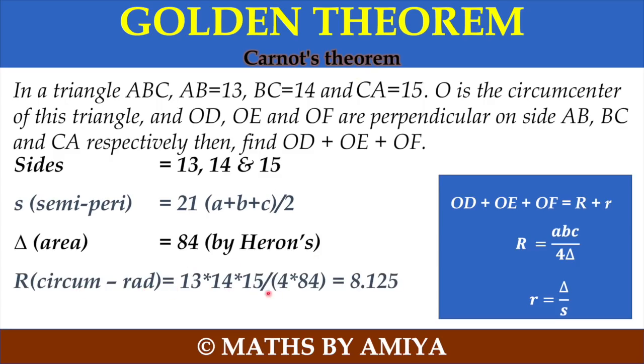Now we have the circum radius, that is ABC upon 4Δ, calculated is 8.125. Now we can easily calculate small r too, which is nothing but the area upon semi-perimeter, is nothing but 4. So we have all the values.